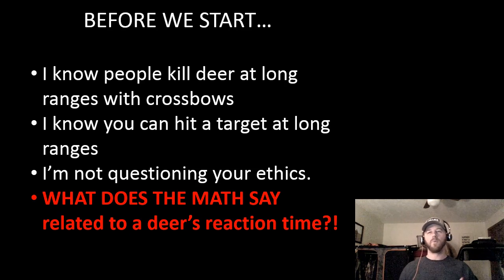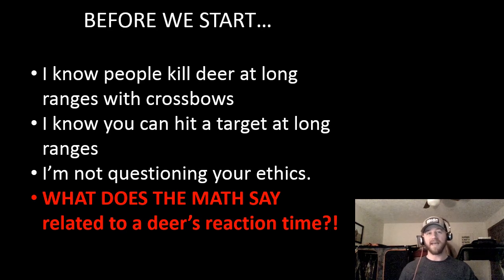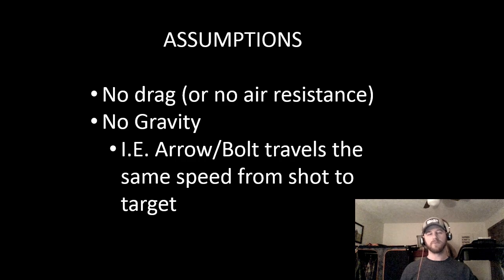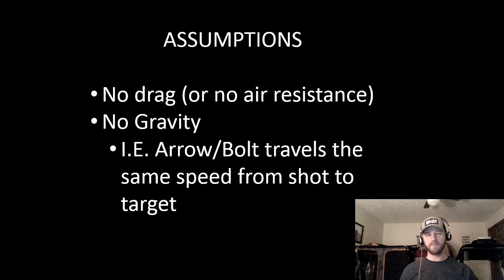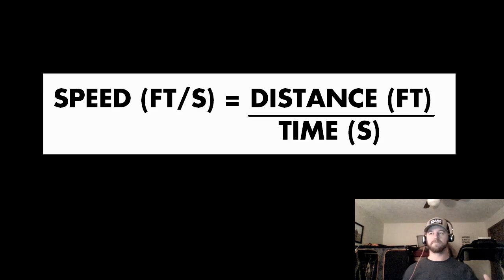Setting all that aside, I want to look at what I'd call good shot distances using math based on the deer's reaction time — that's what this video is about. We're going to make a few assumptions to simplify the equation. One assumption is no drag on our bolt — essentially we're shooting in a vacuum, no wind resistance, no drag. We're also going to assume no gravity, so our bolt or arrow will travel from the weapon to the target at the exact same speed.